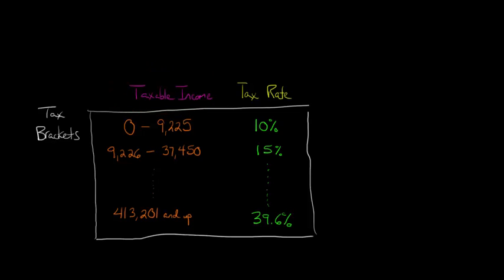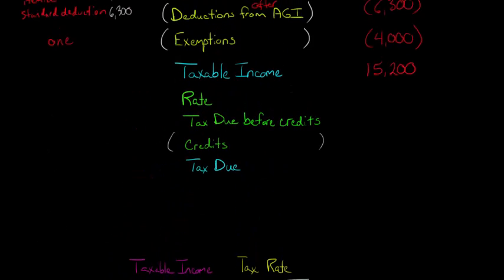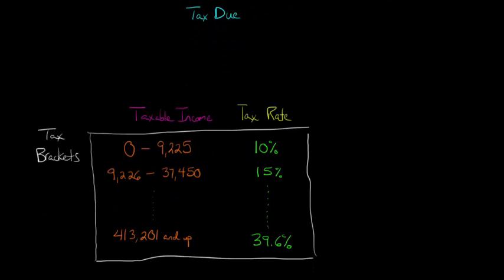We look at our taxable income — not gross income, not AGI, but taxable income. If it's between $0 and $9,225 in tax year 2015, that income is taxed at 10%. Our taxable income is $15,200, which is more than $9,225. So do you just say the tax rate is 15% because we're in that bracket? No, that's not how it works.